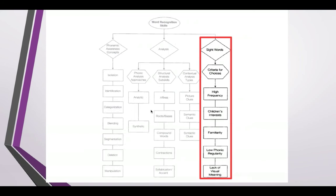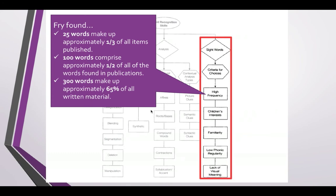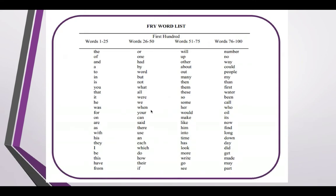A few comments about sight words, which is also in your book chapter. Sight words include both all words known by sight as well as high frequency words. The high frequency words identified by Fry found that 25 words make up approximately one third of all published items, 100 words comprise about half of all words in publications, and 300 words make up approximately 65% of all written material. I'm sure many of you are familiar with Fry's word list — he has up to a thousand, but generally we spend the most time with the first 300 words.